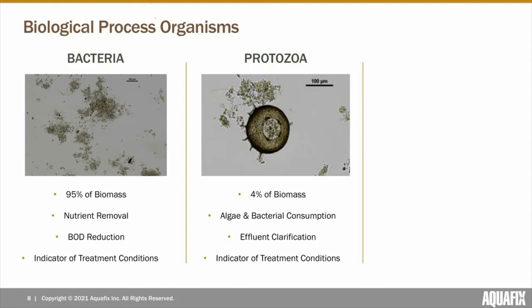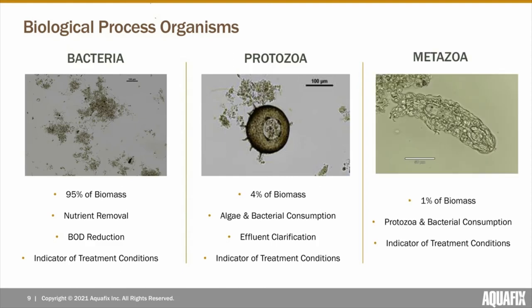Our next group, protozoa, will make up about 4% of your total biomass. They're responsible for consuming algae and bacteria, as well as aiding in effluent clarification. Protozoa are also used as indicators toward the health of your treatment system. Our final group, metazoa, will make up about 1% of your total biomass. They're in charge of protozoa and bacterial consumption and also are indicators of treatment conditions.